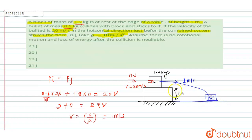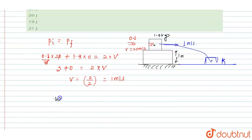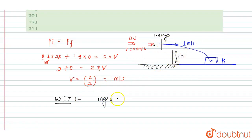The block then falls from a height of 1 meter. We need to find the kinetic energy at the ground. Let the kinetic energy at ground level be K. Applying the work-energy theorem: work done by gravity equals the change in kinetic energy. Work done by gravity is m × g × h, where h = 1 meter.